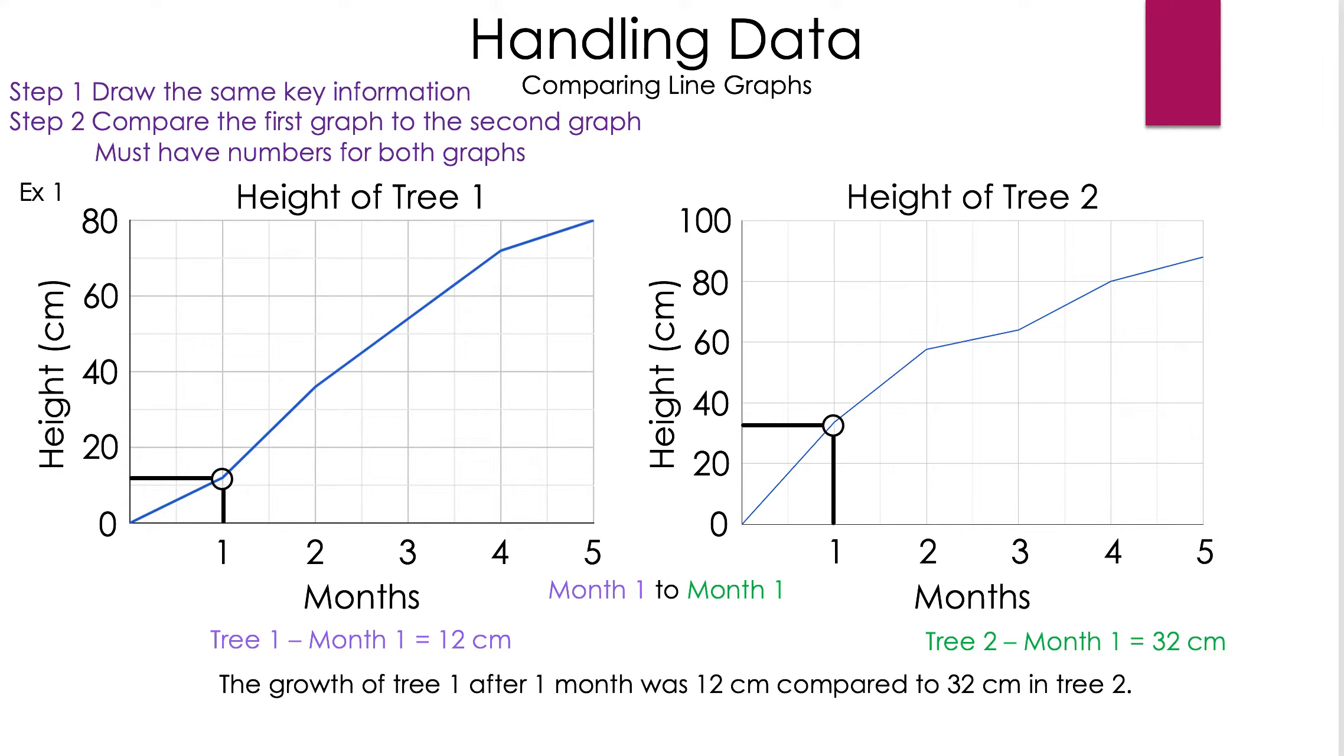The growth of tree 1 after month 1 was 12 centimeters compared to 32 centimeters in tree 2. If you don't like using the word compared, you can use a different one. For instance, tree 2 was 32 centimeters tall after 1 month, which is 20 centimeters taller than tree 1.